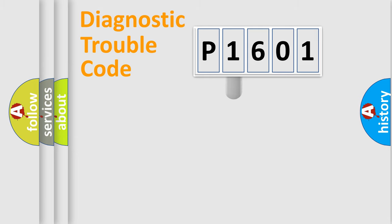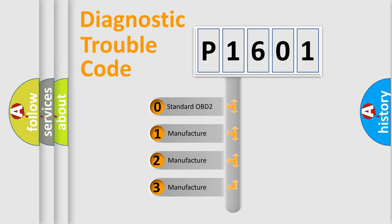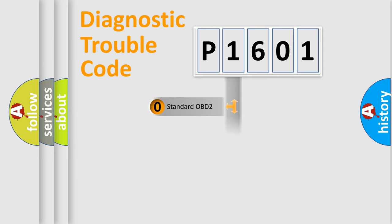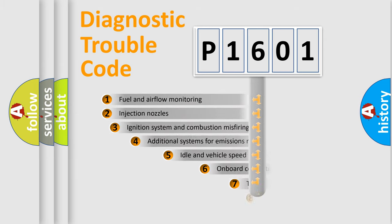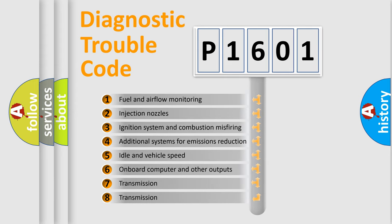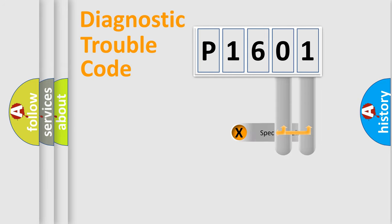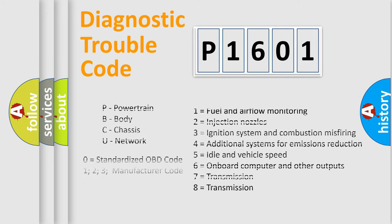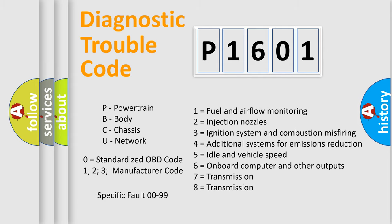This distribution is defined in the first character of the code. If the second character is expressed as zero, it is a standardized error. In the case of numbers 1, 2, or 3, it is a more specific car-specific error. The third character specifies a subset of errors. The distribution shown is valid only for the standardized DTC code, and only the last two characters define the specific fault of the group.